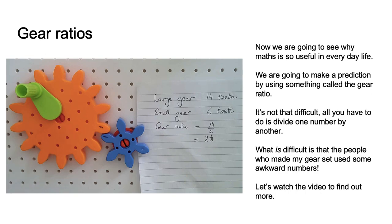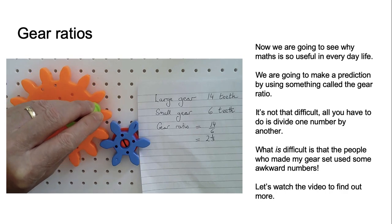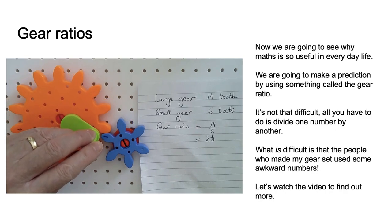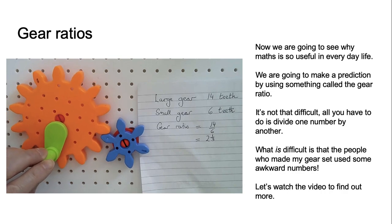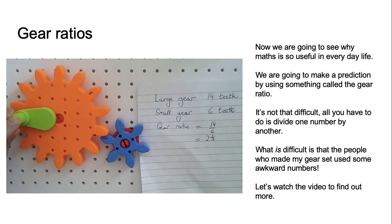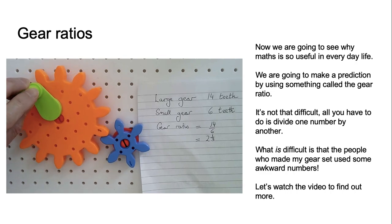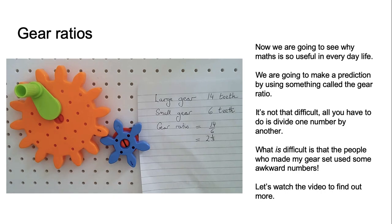Do you think my prediction will be correct? I do hope so. Let's see. The blue cog has gone around once, and here it comes again — it's gone around twice — and look, the orange one is coming back to the start and we've moved along exactly two places. My prediction was exactly right. That is how we work out a gear ratio.